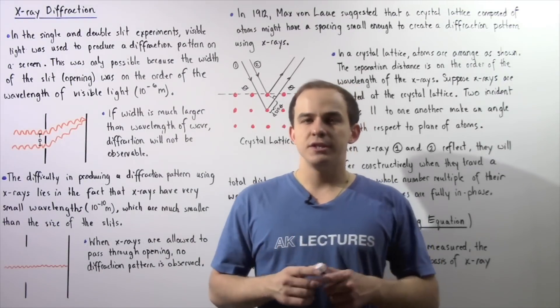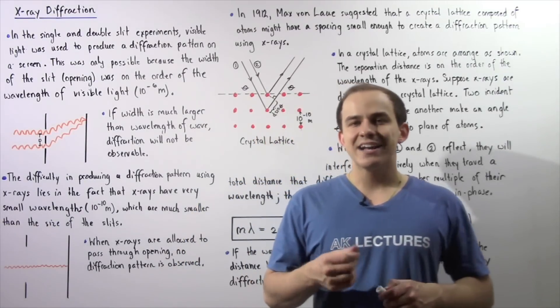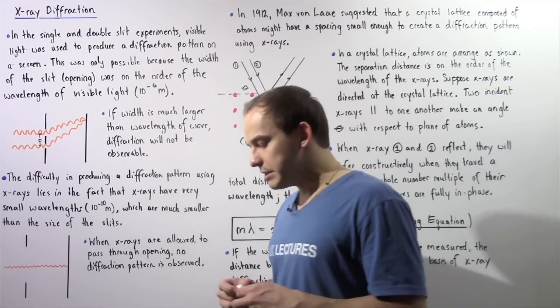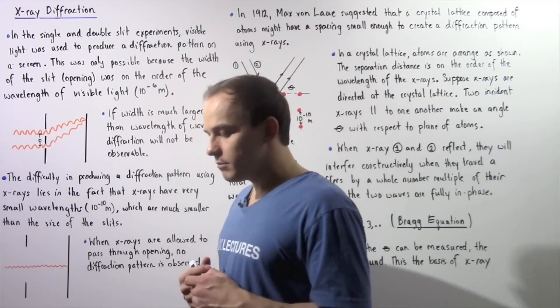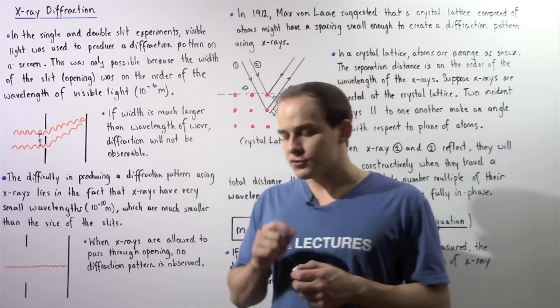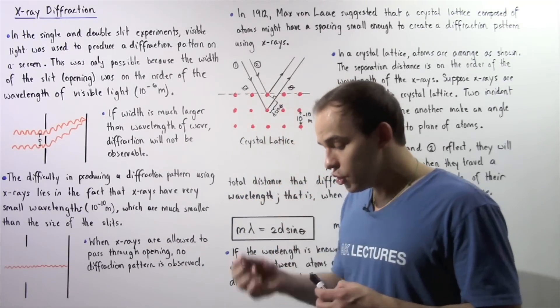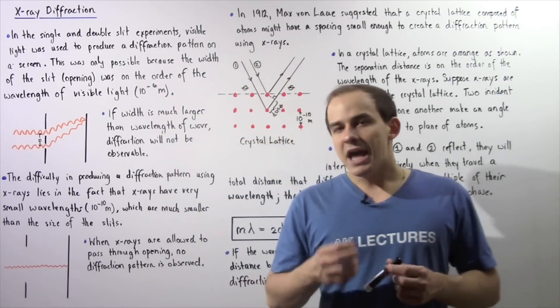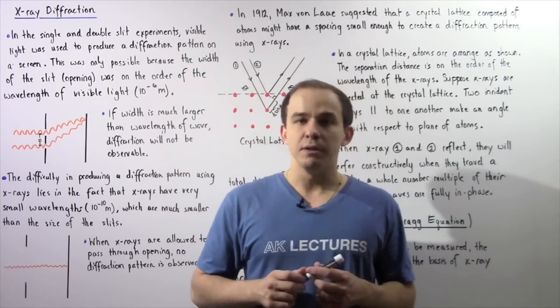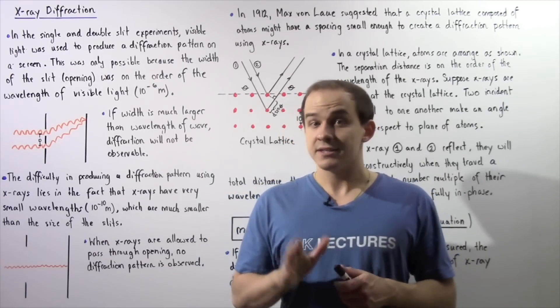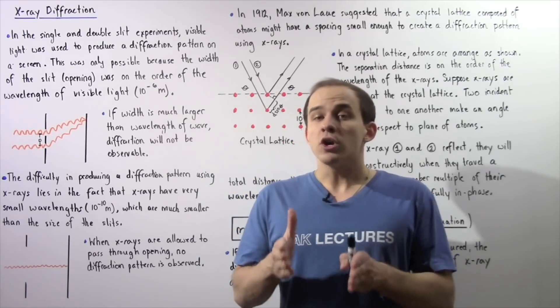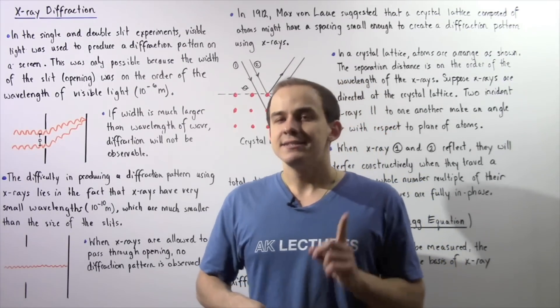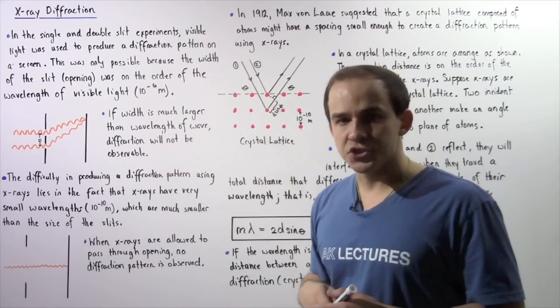Before we discuss X-ray diffraction, also known as X-ray crystallography, let's recall the single and double slit experiments. In these experiments, visible light, one form of electromagnetic radiation, was used to produce a diffraction pattern on a screen. This was only possible because the size of the openings, the size of the slits, were on the same order as the wavelength of visible light, about 10 to negative 6 meters.